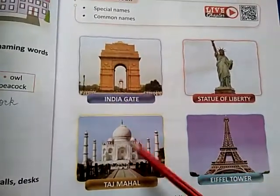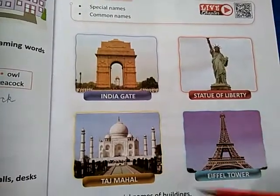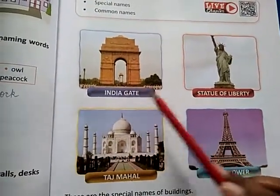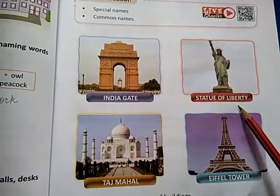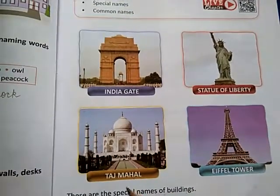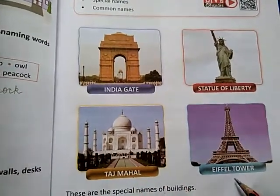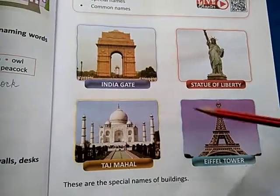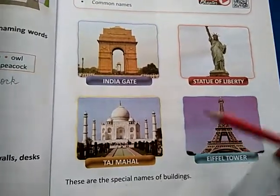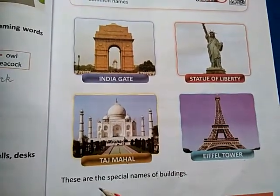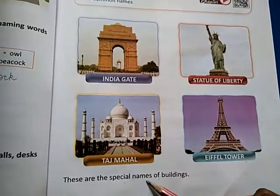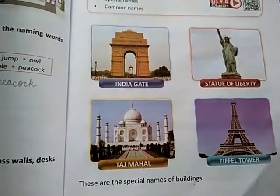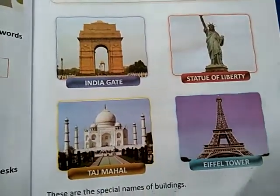See beta, some pictures are given to you with your name. India Gate, Statue of Liberty, Taj Mahal, Eiffel Tower. Ye kuch aapko name diye hue hain, pictures bhi diye hue hain. These are the special names of buildings — ye buildings ke special name hain.